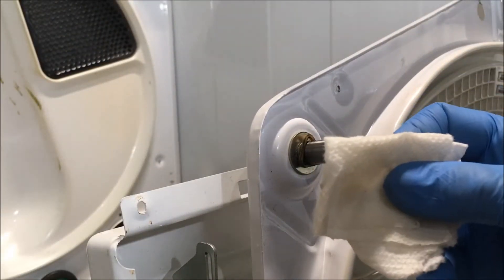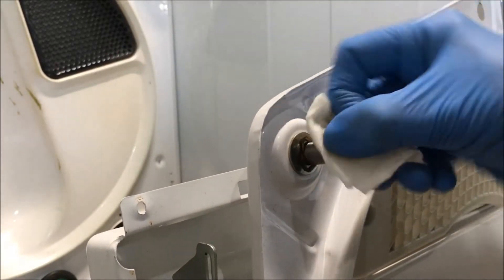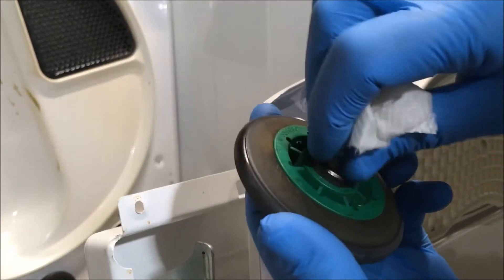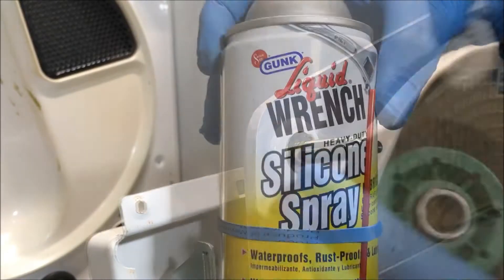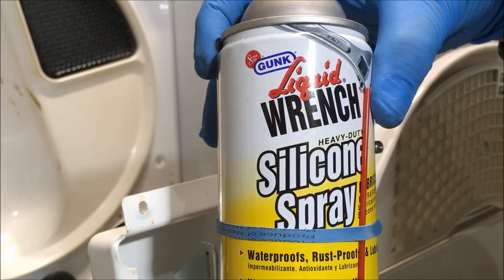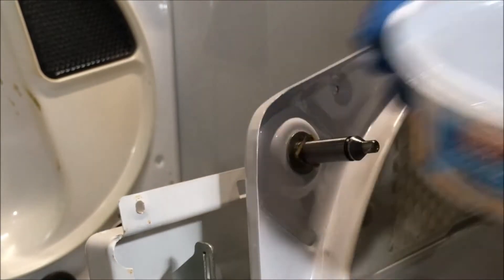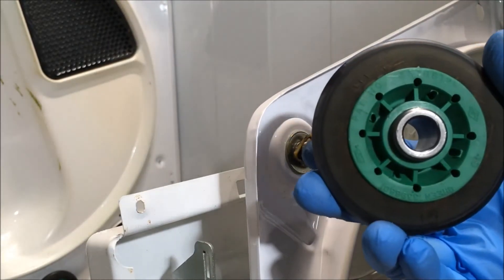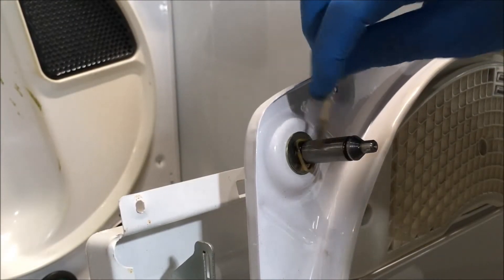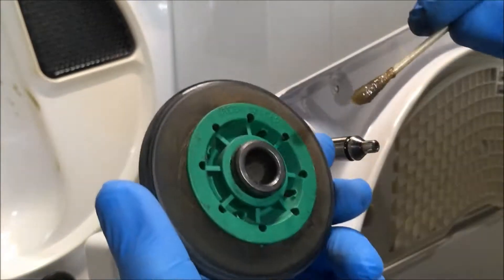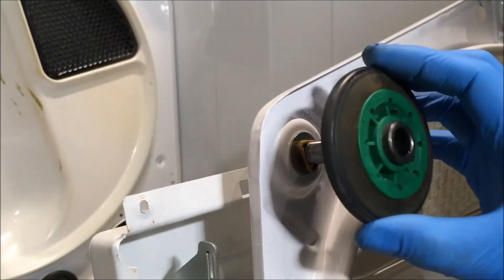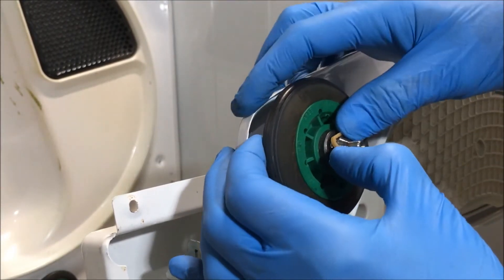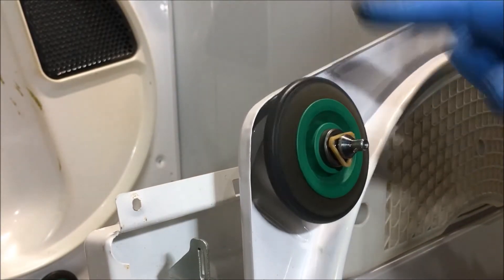I put a little denatured alcohol in a paper towel and I'm just going to clean the shaft of that roller. Then I clean the inside of the roller with the denatured alcohol. Then I use a little bit of silicone lubricant spray that I spray into a container and use a Q-tip to apply the lubricant to the shaft of the roller and to the inside of the roller. Put the new roller on, then put the keeper back on. There you go.